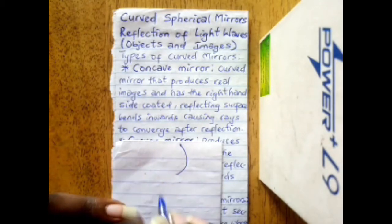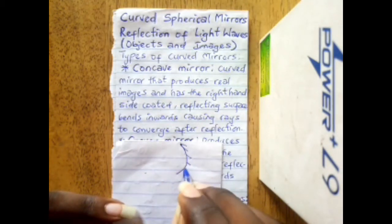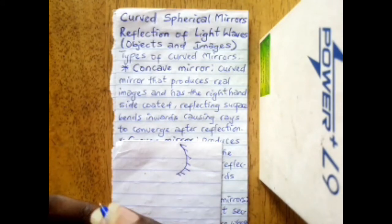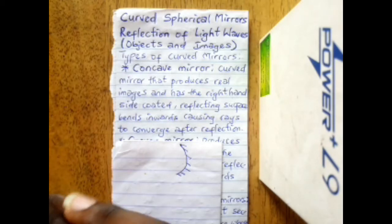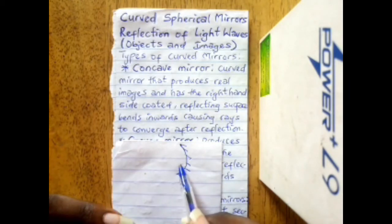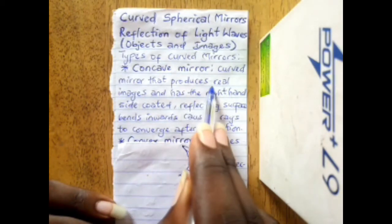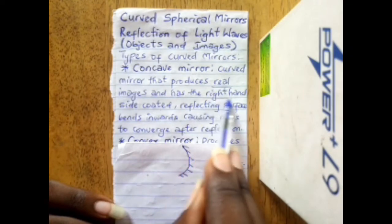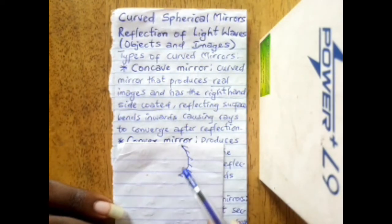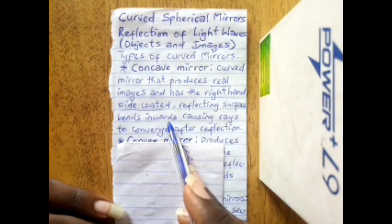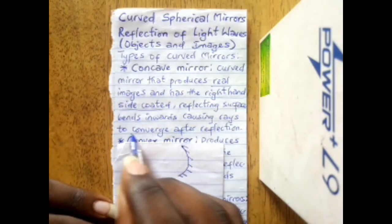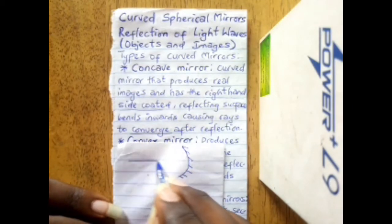A concave mirror has its right-hand side coated. A mirror has just one reflecting surface. For a lens, the total area is the refracting surface, but for a mirror you only have one side coated — the other side is the reflection surface. A concave mirror produces real images and its reflecting surface bends inwards, causing rays to converge.